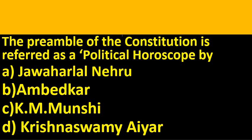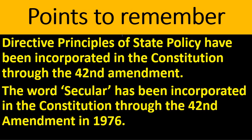The preamble of the Constitution is referred to as the political horoscope — this was said by K.M. Munshi. Also note: Directive Principles of State Policy have been incorporated as per the 42nd Amendment, and the words 'secular' and 'socialist' were also added at that time.